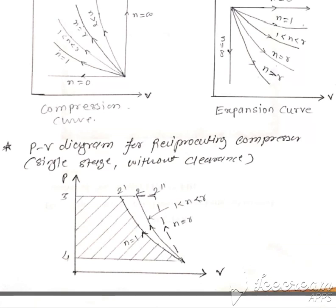Process 1-2 is a compression. For polytropic compression, the value of n lies between 1 and gamma. Then process 2-3 is a delivery process, and process 4-1 is a suction process. Now considering isothermal compression, process 1-2 is an isothermal compression.